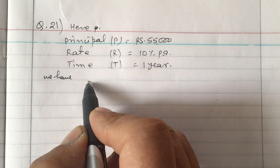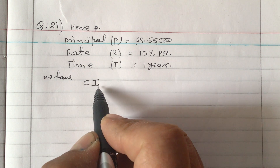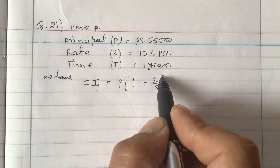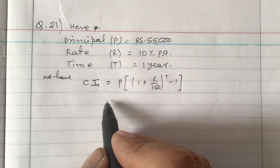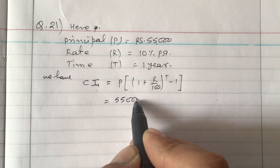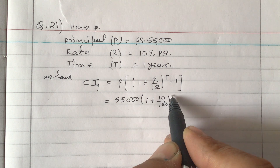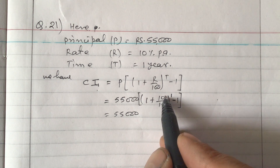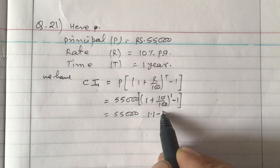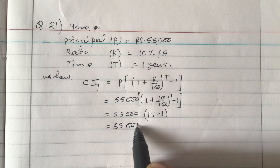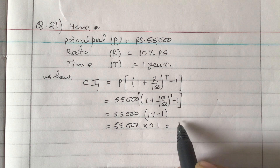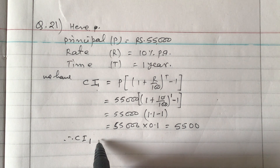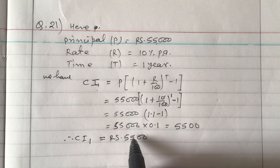For Case 1, we find CI1 using the formula: CI1 = P × [(1 + R/100)^T − 1]. Substituting: 55,000 × [(1 + 10/100)^1 − 1] = 55,000 × [1.1 − 1] = 55,000 × 0.1 = Rs 5,500. Therefore, the compound interest for the first year, CI1, equals Rs 5,500.